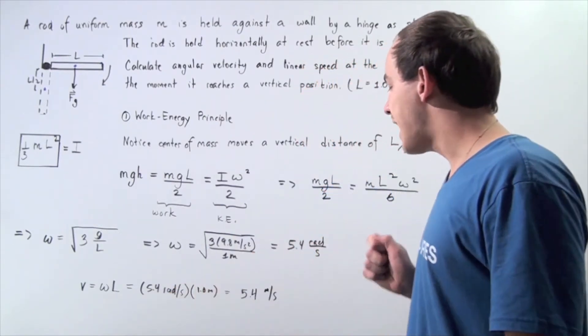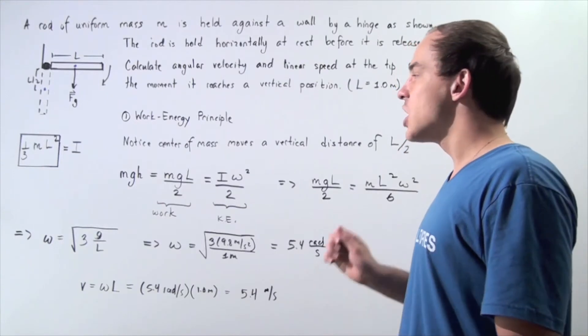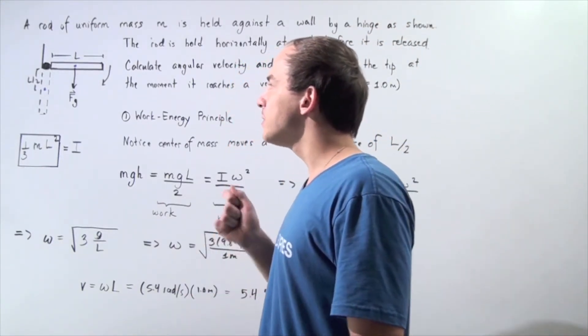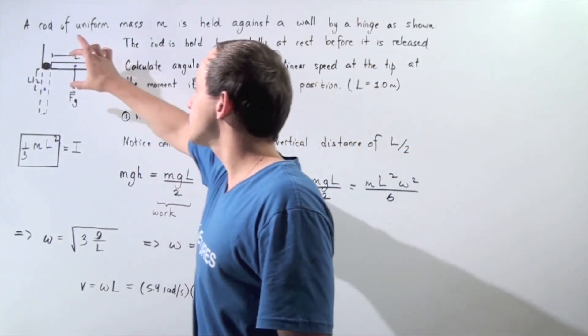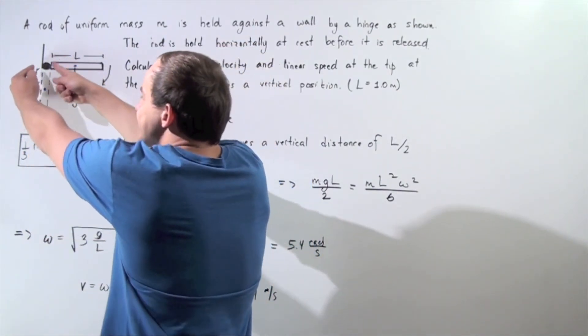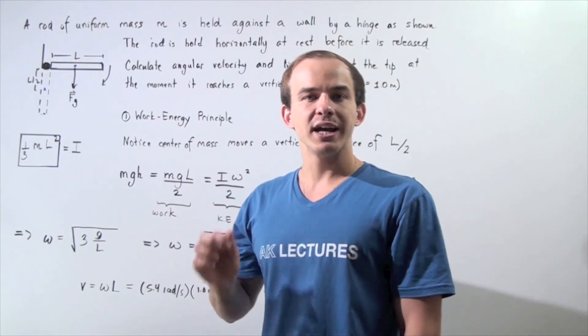So we multiply and we get 5.4 meters per second as the linear velocity of the object when the object's center of mass displaces a vertical distance of L over 2, when the object ends up exactly in the vertical position along our Y axis.